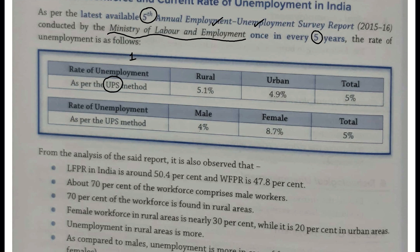Ek aur baat main batana chahunga — aisa nahi hai ki yeh sirf UPS method ko hi dekhta hai. UPS method ke according thoda sa broader level par isliye main UPS pe focus kar raha hoon kyunki UPS thoda sa broader level par humein picture deta hai, halaanki woh ek UPS ki ek limitation bhi hai. Ek saal tak ghar pe baithne wale log jo ki 15 se 60 saal ke hon, willing hon, physically-mentally fit bhi hon — aur aise log ek saal tak kaam-dhandaa na dhundhein.